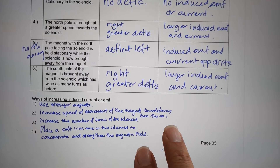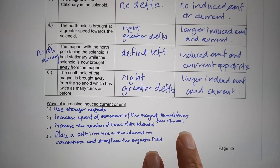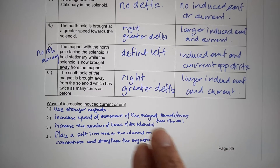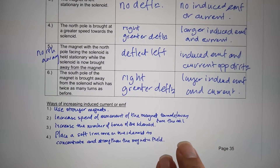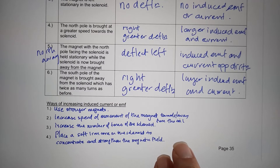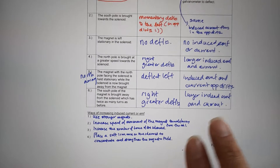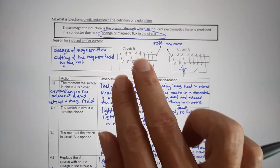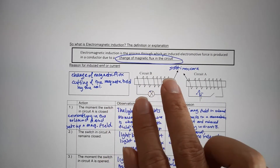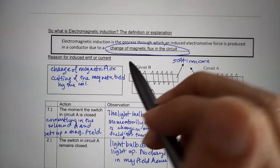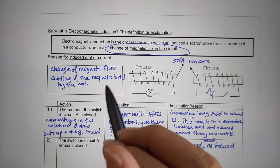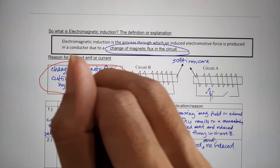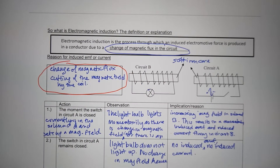For the ways of increasing the induced current or EMF, you can observe from the diagram: use stronger magnets, move the magnet at a faster speed towards or away from the core, increase the number of turns of the solenoid, or place an iron core to concentrate and strengthen the magnetic field. The reason behind all this is that there is a change of magnetic flux, or you can say there is a cutting of magnetic field lines by the coil.